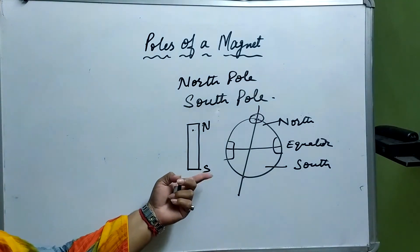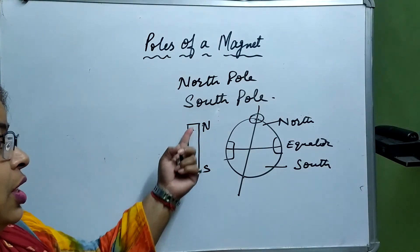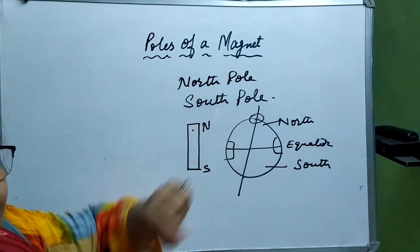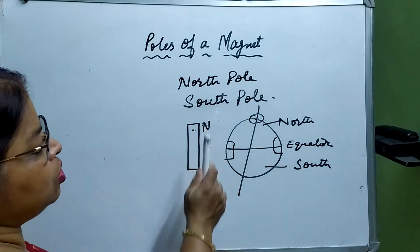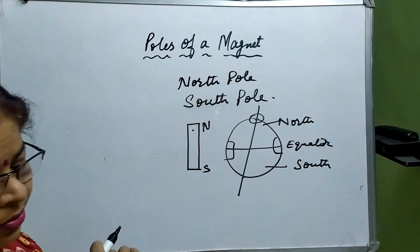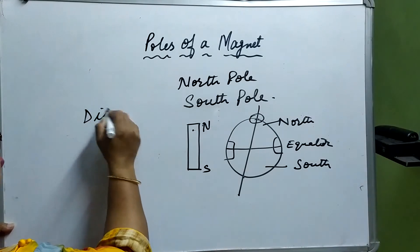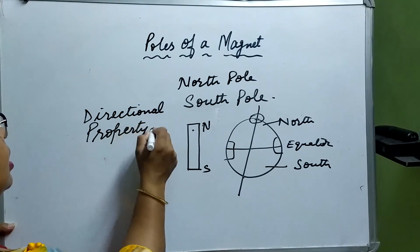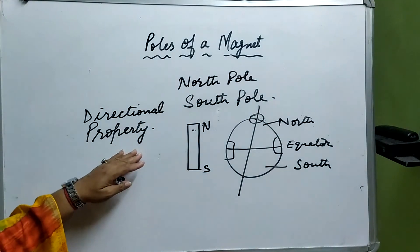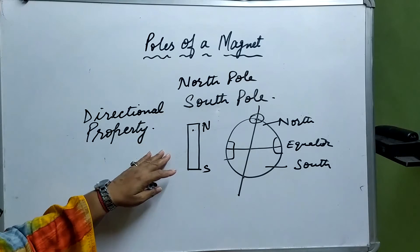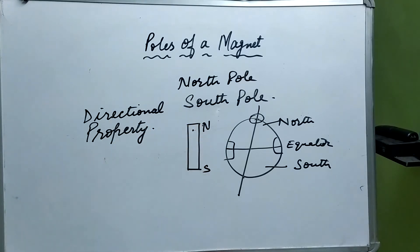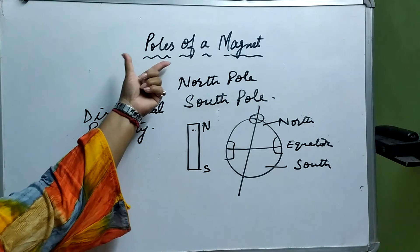So like this we can give names to the poles based on which direction they are pointing geographically. This is called the directional property of a Magnet — because it is aligning itself according to direction, we call it directional property. This is how we give the names of the poles of a Magnet: North Pole or South Pole.